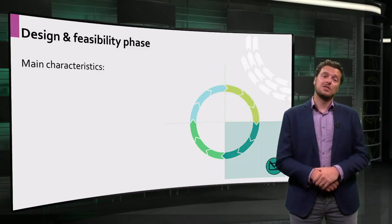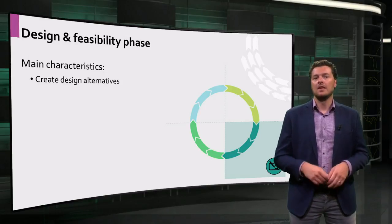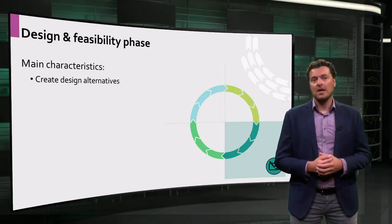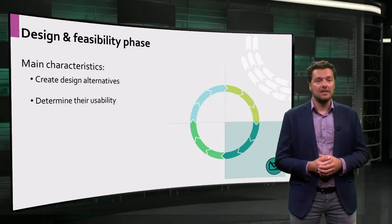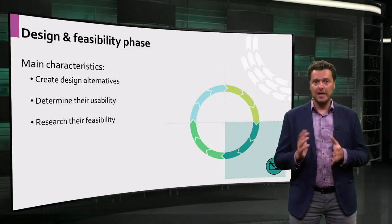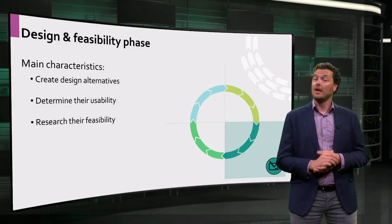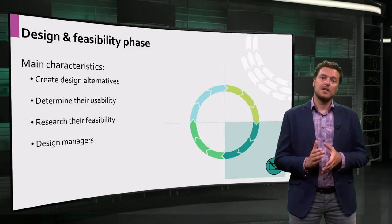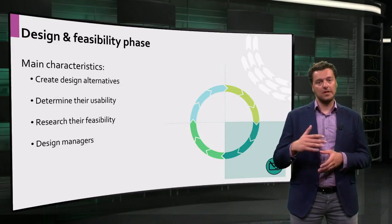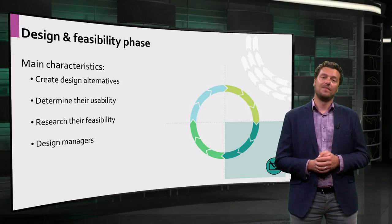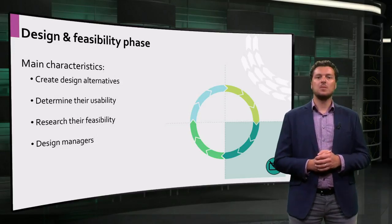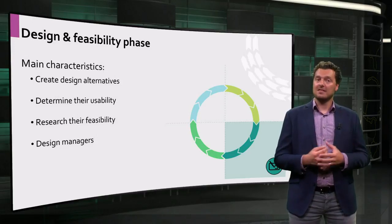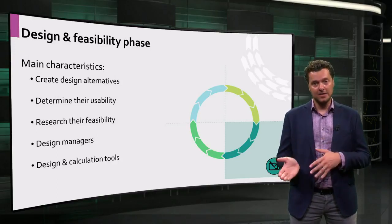In the design and feasibility phase, you create several design alternatives to implement your new building use. The design alternatives or concepts come at certain costs. You have to calculate the cost-benefit ratio and usability of each design concept. Therefore, in this phase, design managers determine which building adaptation concept is both functionally optimal and financially feasible. If none is useful or feasible, they make new design alternatives. So in this phase, it is all about combining design and calculation tools.